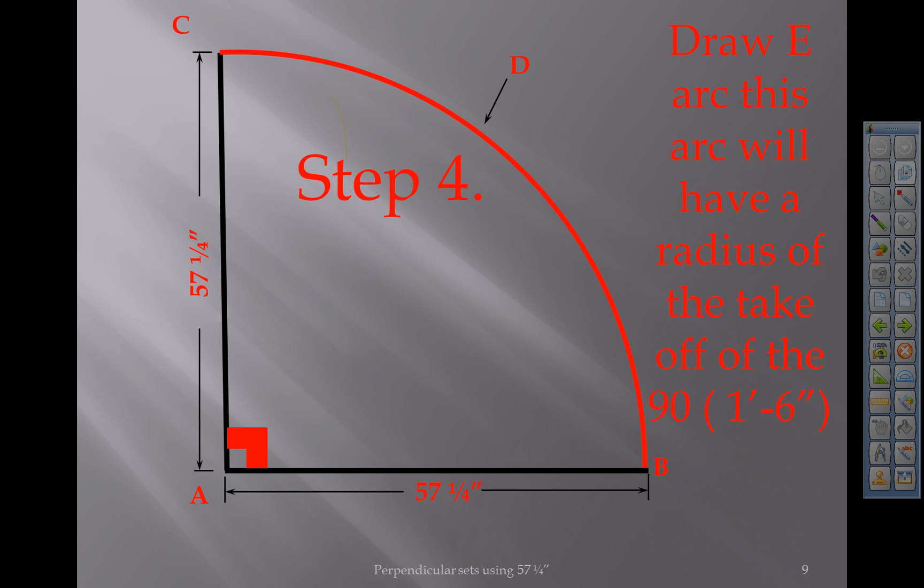Step 4: Draw an E arc. This arc will have the radius of the takeoff of the 90. In this case 1 foot 6, because it's a 12 inch long radius 90.